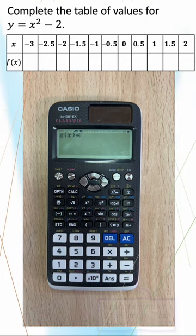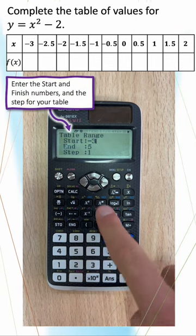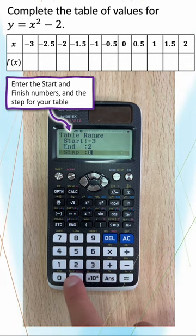Our table of values goes from minus 3 to 2, so our start is minus 3. And we're going up in steps of 0.5, so type in our step as 0.5.